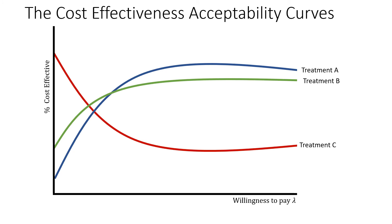The second term in our expected value of perfect information calculation is the main source of this switch — that is really what is driving it. We note that this switch occurs through the expected value without perfect information calculation. Let's try relating this back to something more familiar: the cost-effectiveness acceptability curves.